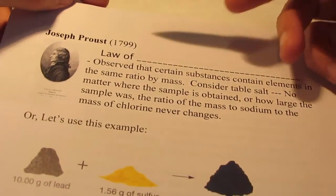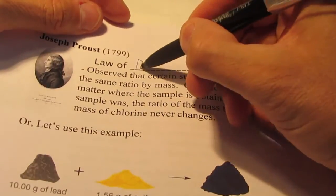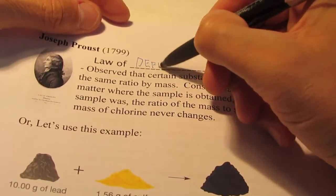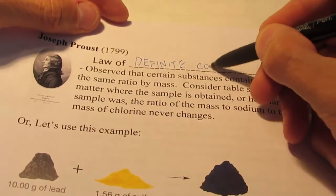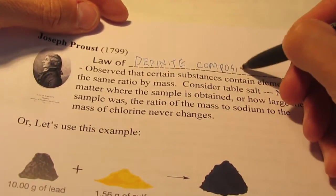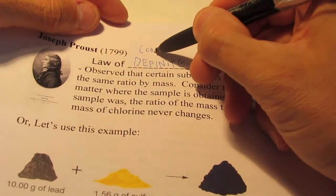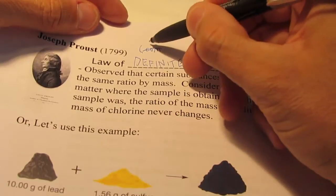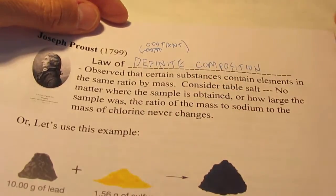Shortly after, an individual named Joseph Proust came up with something known as the law of definite composition. And sometimes you'll see this referred to as the law of constant composition.